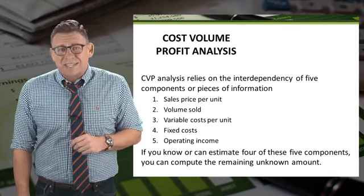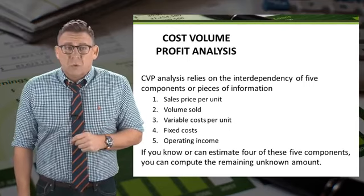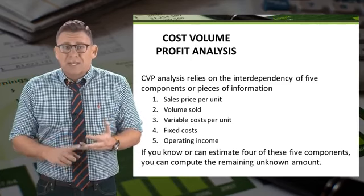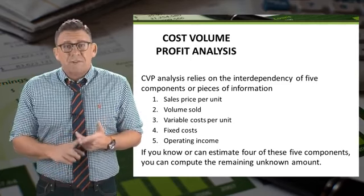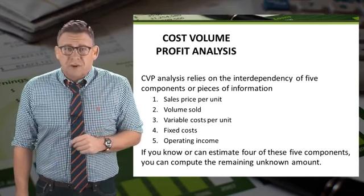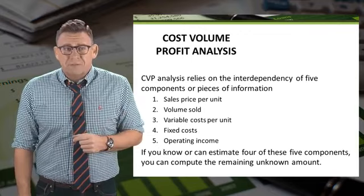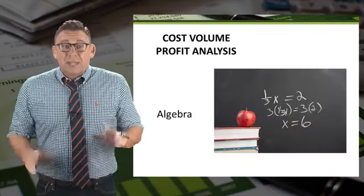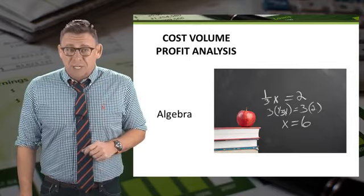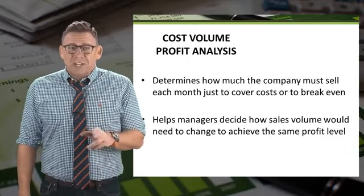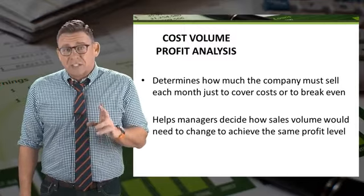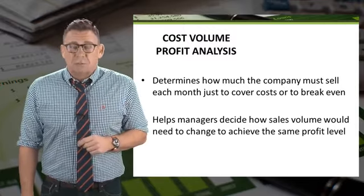CVP analysis is basically elementary algebra. We have five variables: volume, sales price, variable costs, fixed costs, and operating income. As long as we know four of these variables, we can solve for the fifth. Yes, I said algebra — that thing you told your parents you would never use in real life. We will continue CVP analysis to determine how many units a company needs to sell to break-even or to achieve a target profit.